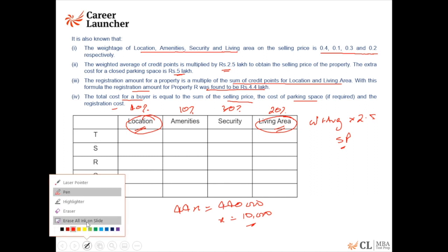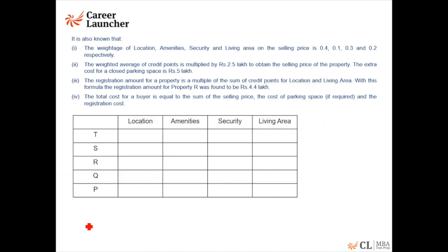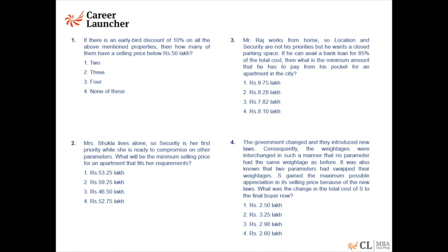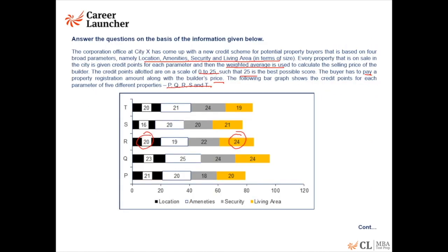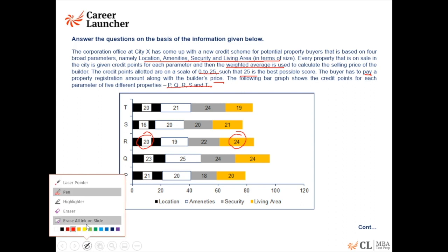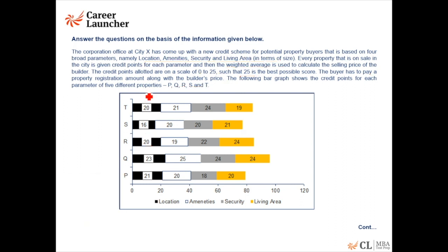Total cost for the buyer equals the sum of selling price, parking space if required, and registration cost. Now, should I make the table first? I'll say no. Such data sets typically have independent questions, and you should fill up the table as you go along rather than filling it first, because very rarely do you need all the information for all properties to get to the answer.